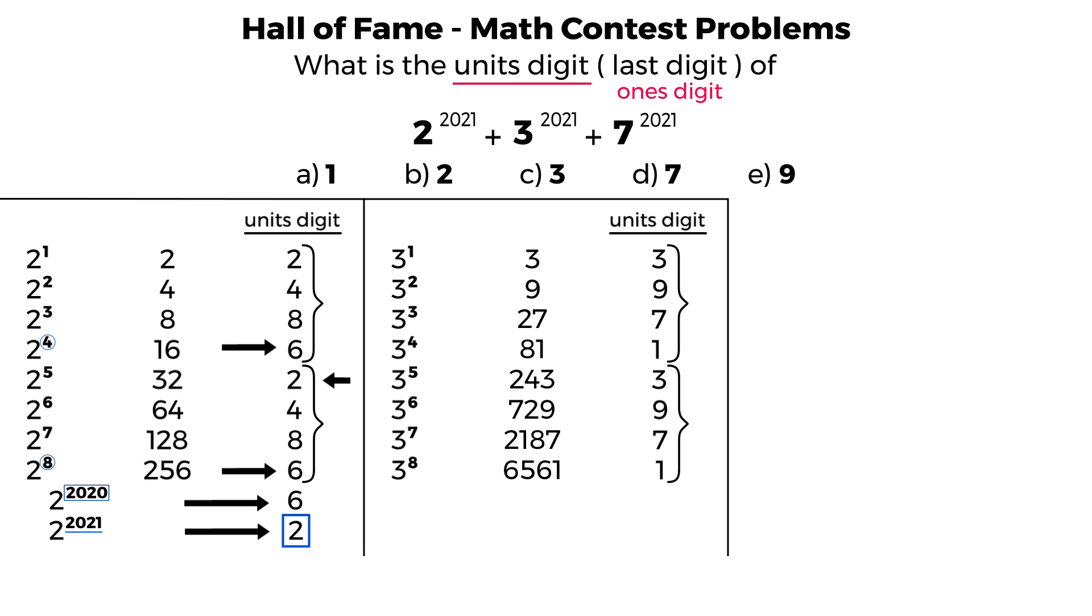And very similarly, we want to look at the units digit for 3 to the power of 2021. Every time the exponent is a multiple of 4, the units digit in this case is 1. So for 4, for 8, and so on. Now, is 2021 a multiple of 4? No. 2020 is a multiple of 4. So therefore, that units digit will be 1. And therefore, the very next units digit in this pattern, which is 3, is the units digit of 3 to the power of 2021. So that takes care of 3.